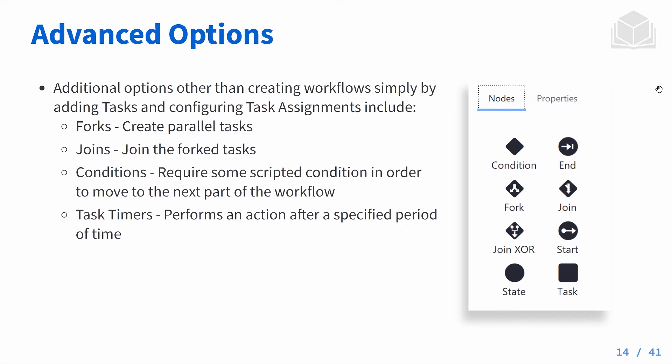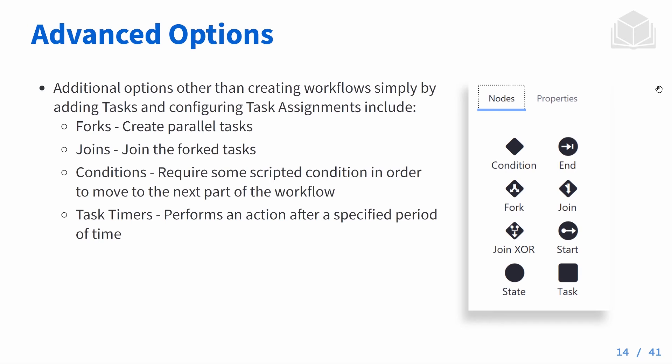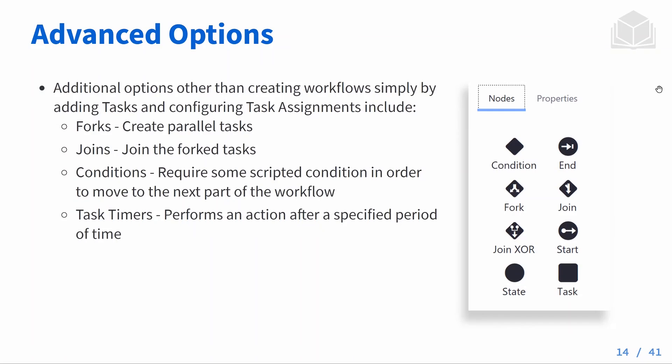Here are some of the other node options. We have forks, which create parallel tasks — so if we need two different people to review an asset, like marketing looking at one and graphic design at another, we can use a fork to make those happen in tandem. To undo a fork, we use a join. We also have condition nodes, which require a scripted condition to pass through — useful for more custom workflows. And we have task timers, which perform an action automatically after a specific period of time, such as sending a notification or reassigning a task.